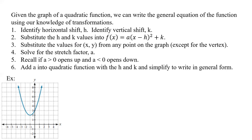Recall, if it opens up, it's going to be a greater than zero. And if it was a maximum, then a was going to be less than zero, so it would open down. Then we add our a into the quadratic function with the h and k, and we basically simplify to write it in the general form.